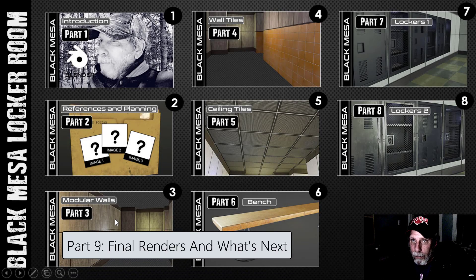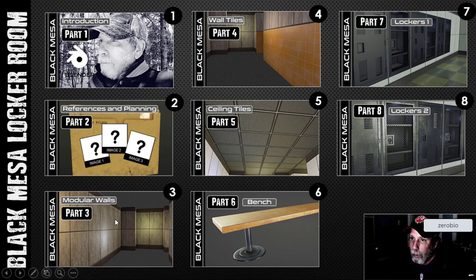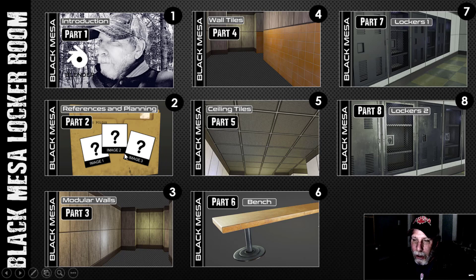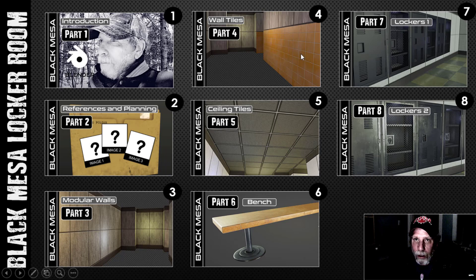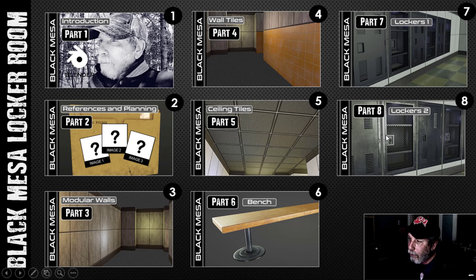This is the final video in the series on modeling and texturing the black mess of locker room — the ninth video overall. In part one I was walking my dogs and talking about the project. Part two covered references and planning. Part three: modular walls and texturing in Substance Painter. Part four: wall tiles. Part five: the ceiling. Part six: the bench. Part seven: the lockers. Part eight: locks and texturing of the lockers.